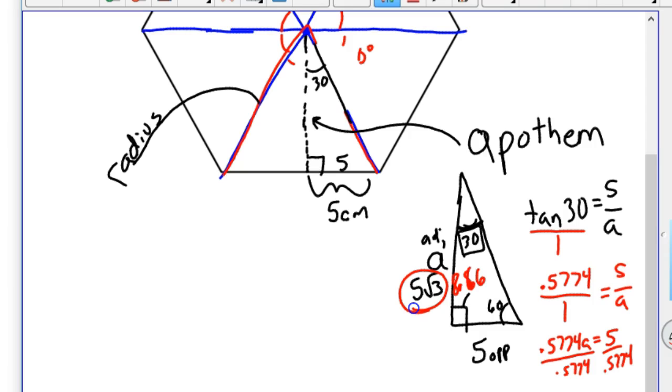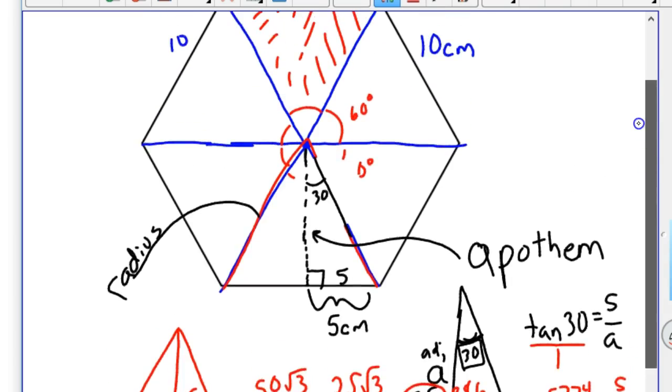So when we do this, we can go ahead and find the area of each of the triangles. So one of the triangles, the base is 10, and the height is 5 root 3. And so you just take 10 times 5 root 3 divided by 2. So that would be 50 root 3 divided by 2, which is 25 root 3. So every triangle in that hexagon is 25 root 3.